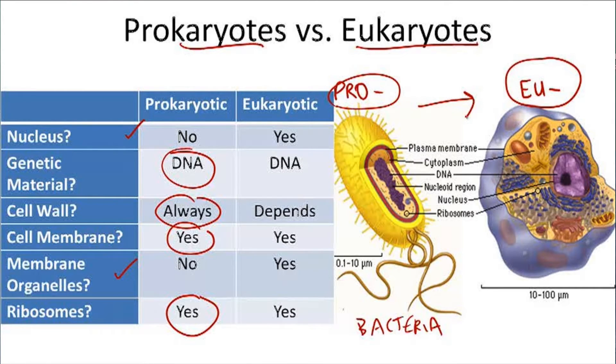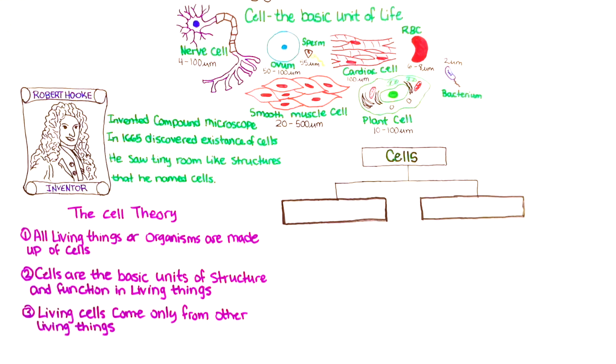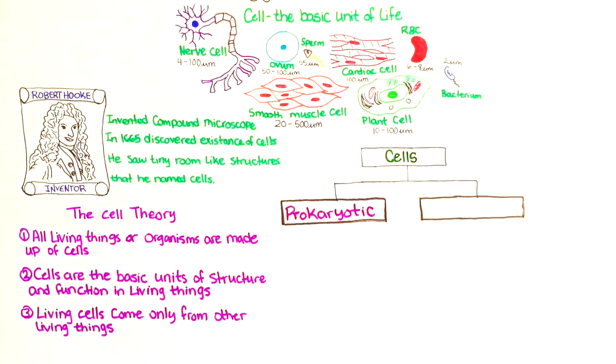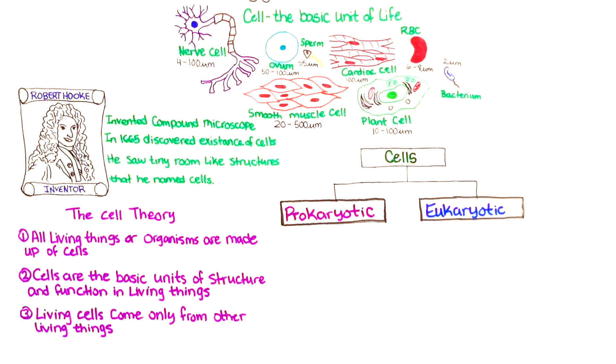Today we're going to be talking about cells. Although there are lots of different cells, most of them can be divided into two main categories: prokaryotic and eukaryotic.